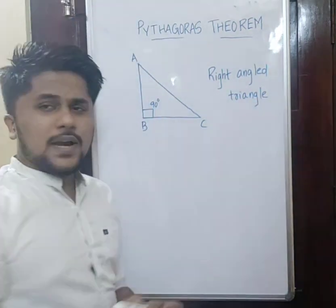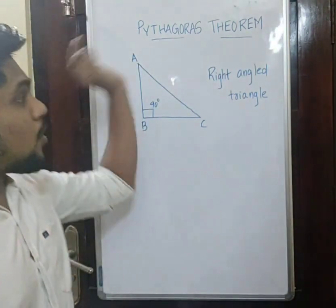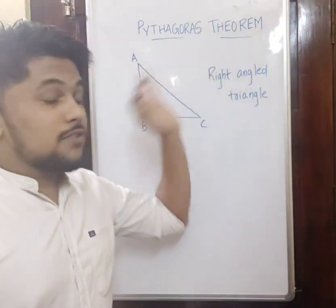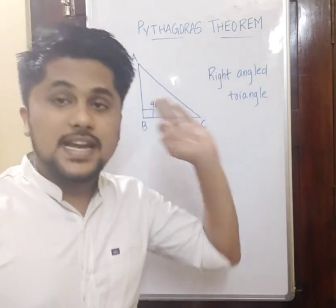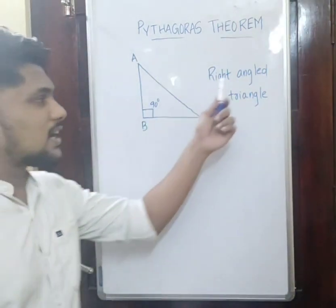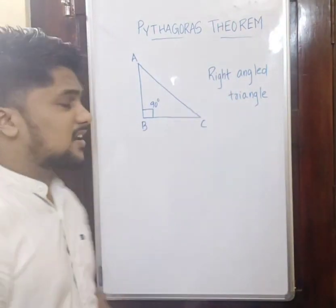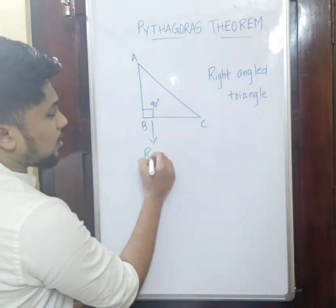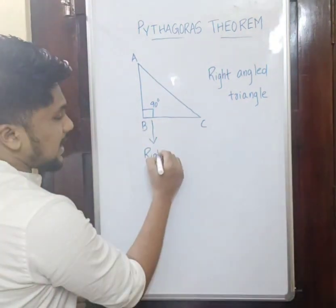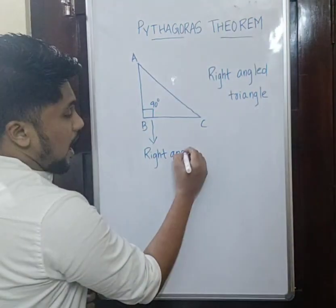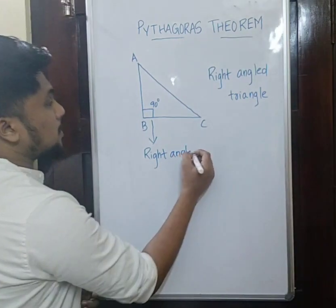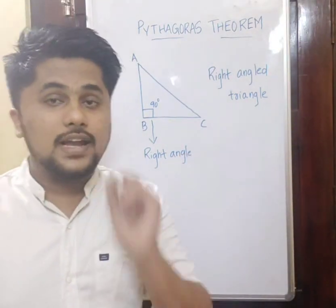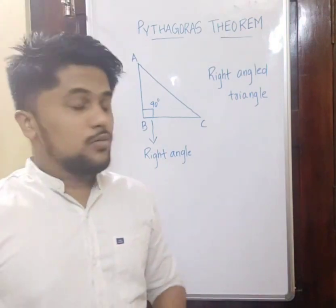In the Pythagoras theorem, we mostly use a right-angled triangle. What is a right angle? A right angle is nothing but a 90-degree angle. So in a triangle, we have one angle of 90 degrees — that is the right angle.